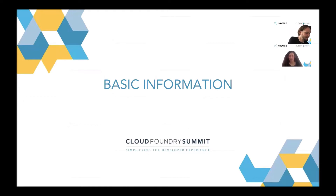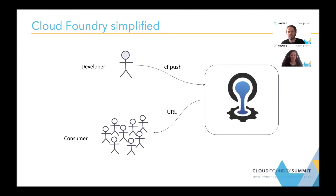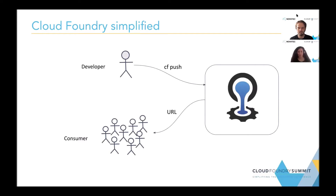Let's now have a look at some basic information about Cloud Foundry. If we look at Cloud Foundry from a high-level perspective, seeing it as a black box, we can have a very simplified overview. We can see two main categories of users interacting with it: the developers and the consumers. The developer brings an application to the platform. The Cloud Foundry platform processes it somehow and returns back a URL to the consumer, who then uses the application and consumes the application logic.